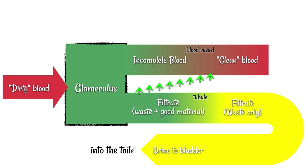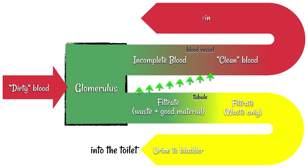The urine exits the body. The blood, which is now useful and complete, goes out of the kidneys via the renal vein and back into the circulation where it can be used normally.